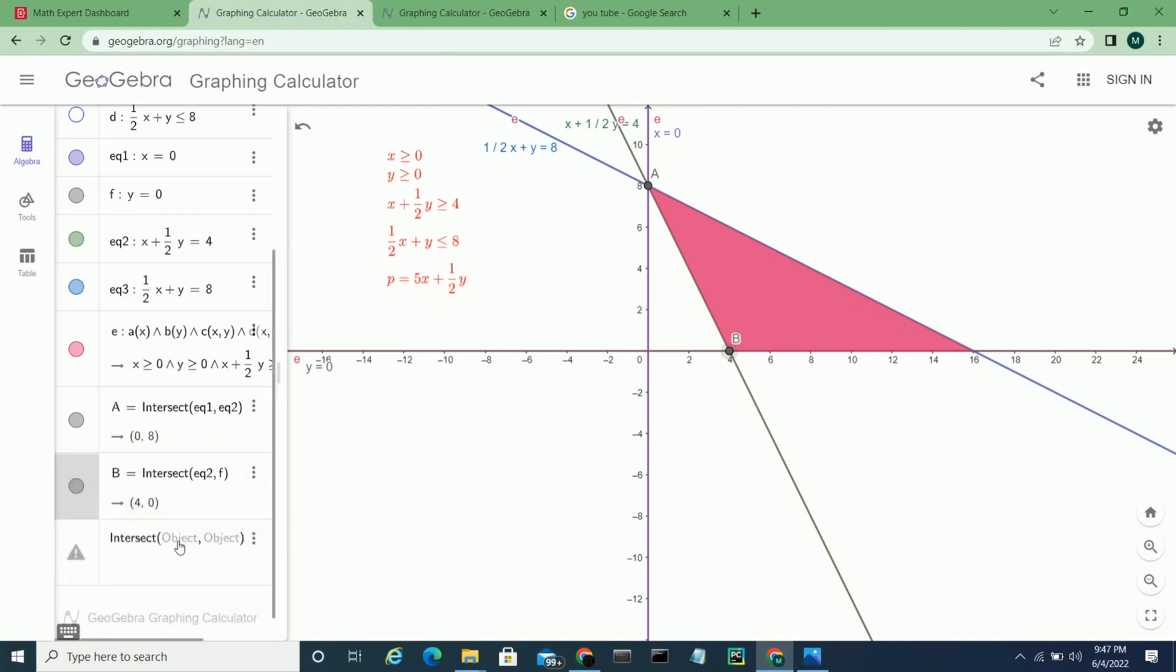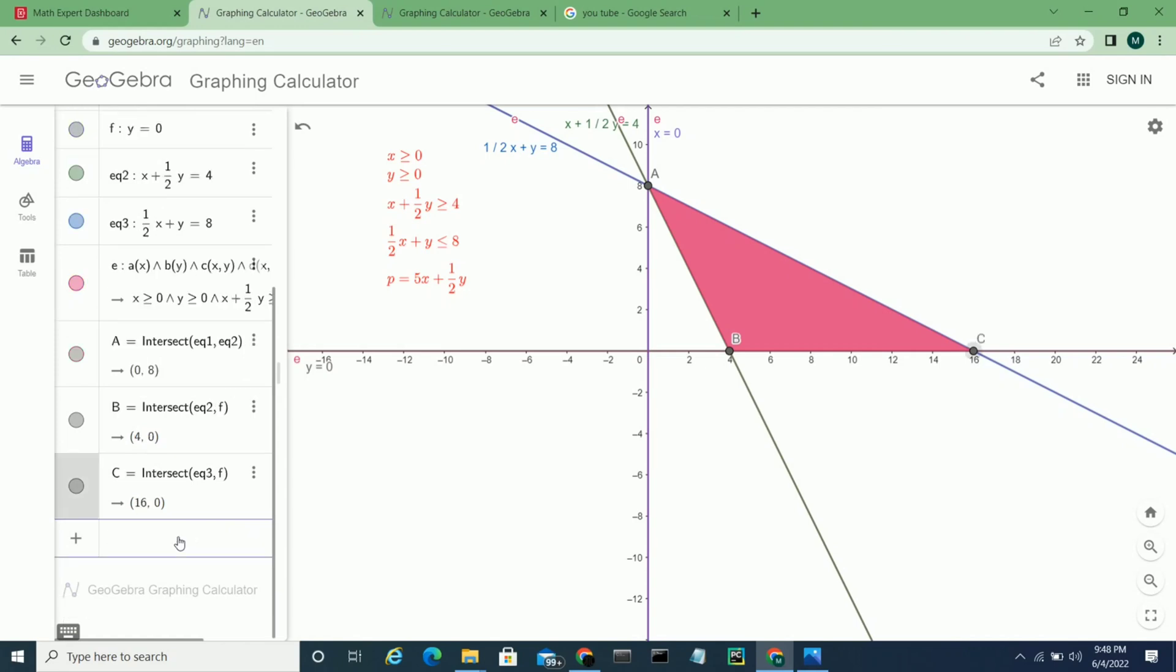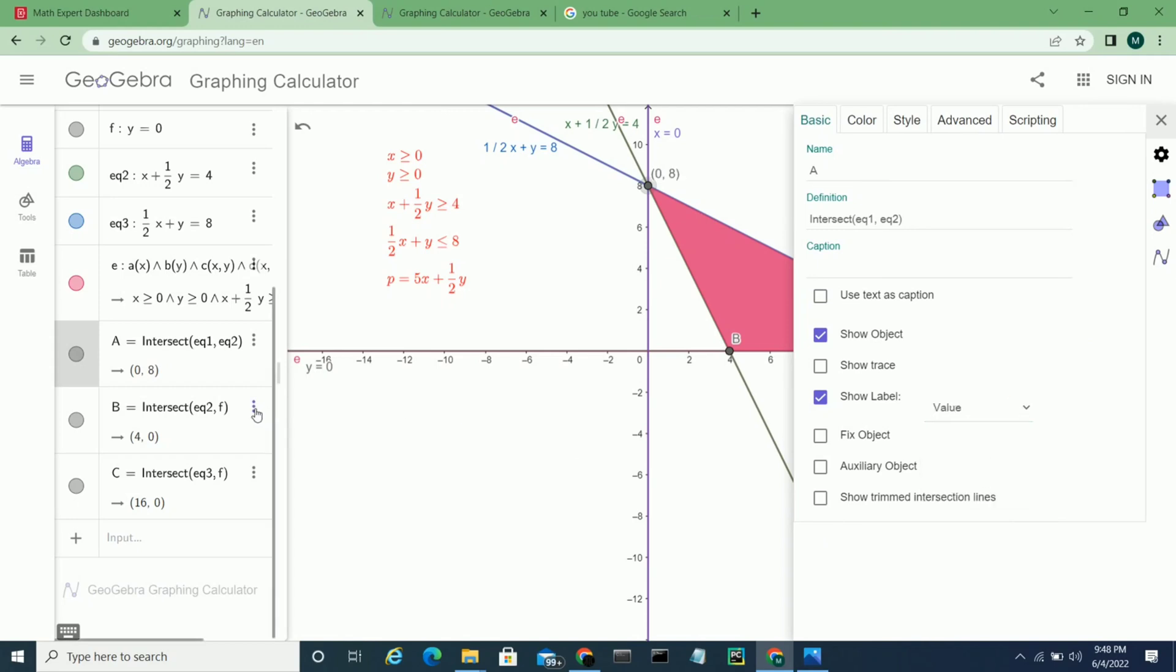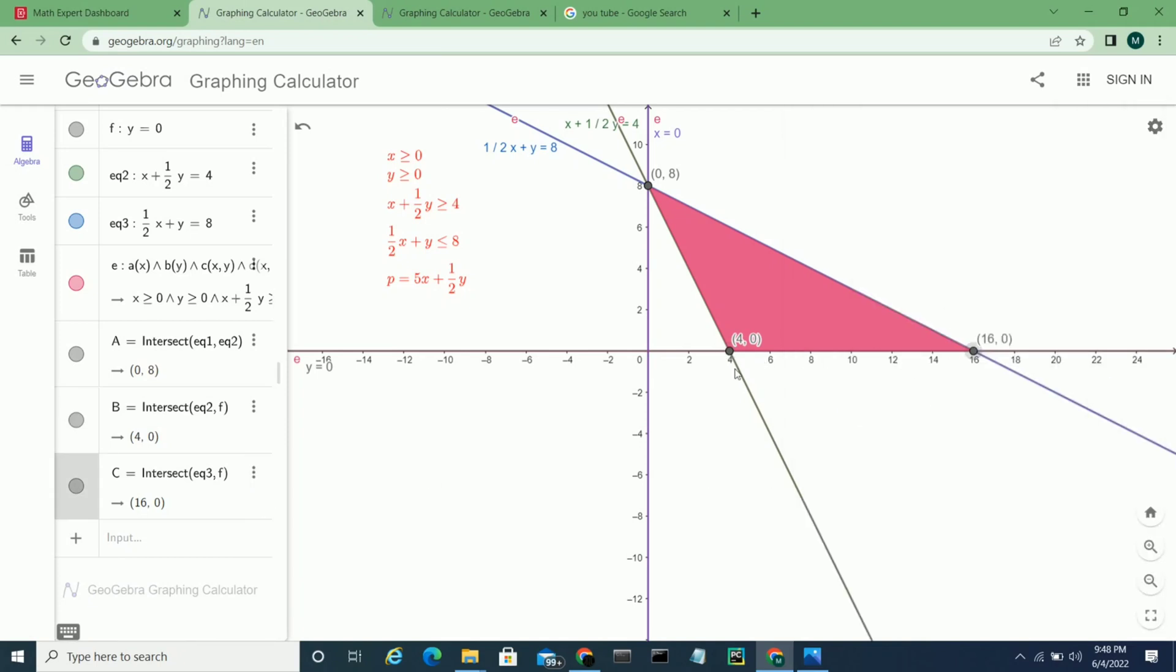Same procedure for equation 3 with f, means y equal to 0. So we get 3 intersection points. Now we label. So we get all the values on the graph: 4 comma 0, 16 comma 0, and 0 comma 8.